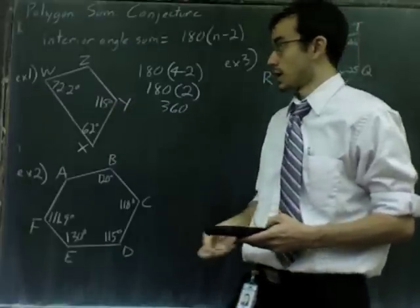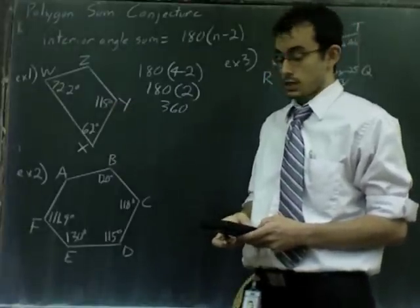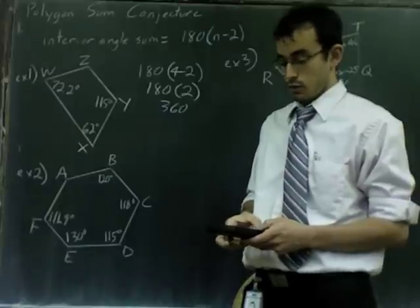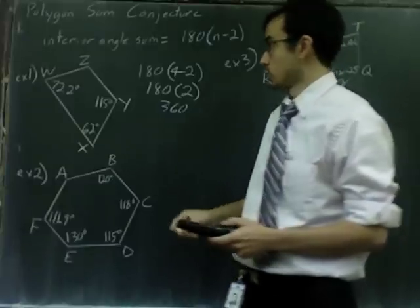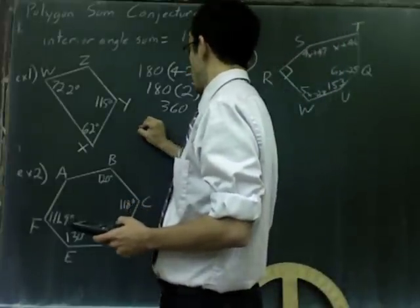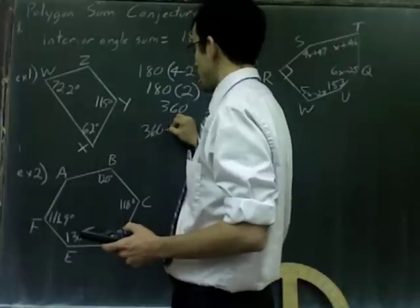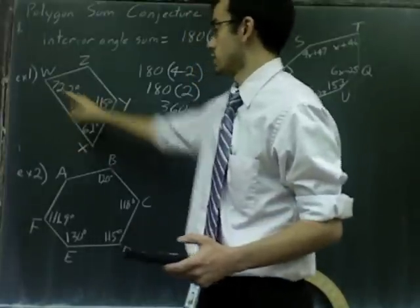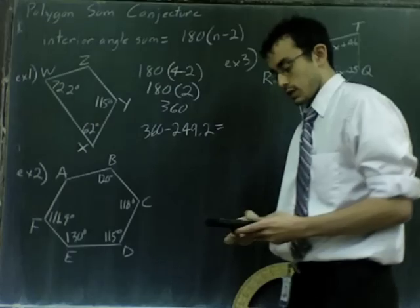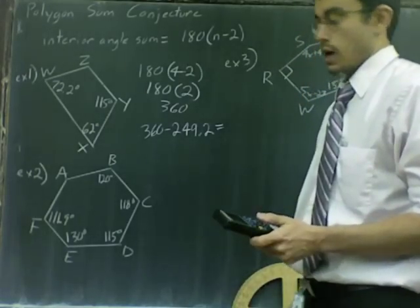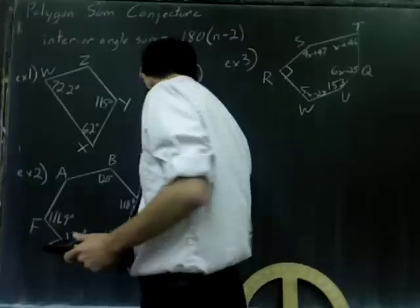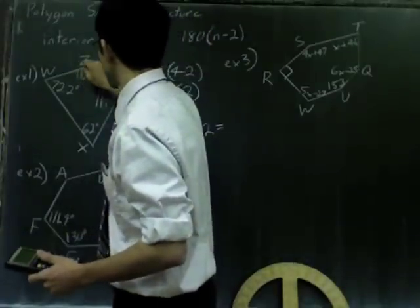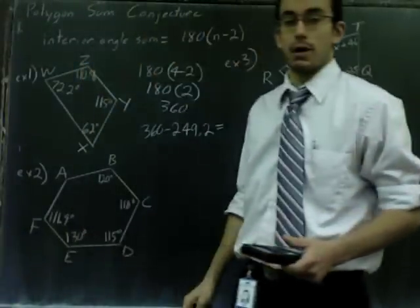All you do is you add these three up and subtract from that number. So if I go on my calculator, I add up 115 plus 62 plus 72.2. I'm going to get 249.2, and all I'm going to do is 360 minus that 249.2. When I do 360 minus that, I get 110.8. And that's my answer for that problem.